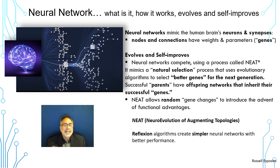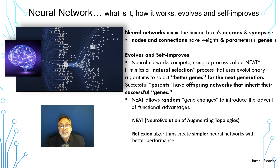So what exactly is a neural network? How does it work, and how does it evolve and self-improve? Neural networks mimic the human brain's neurons and synapses. There are nodes and connections that mimic our neurons and synapses, and they have weights and parameters, which are sometimes called the genes of the neural network.